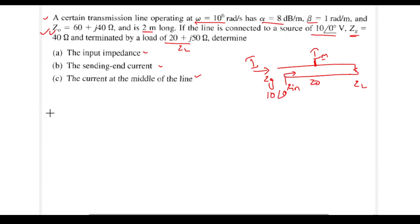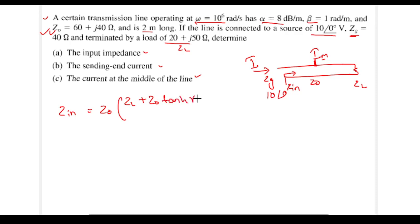To find the input impedance, we use the standard transmission line formula: Z_in equals Z0 times the quantity ZL plus Z0·tanh(γL), divided by Z0 plus ZL·tanh(γL).